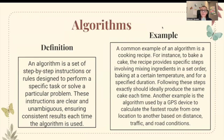An algorithm is a set of step-by-step instructions or rules designed to perform a specific task or solve a specific problem. These instructions are clear and unambiguous, ensuring consistent results each time. A common example is a cooking recipe — baking a cake requires mixing ingredients in a set order, baking at a certain temperature and duration, and if you follow the steps exactly, you produce the same cake every time. A GPS device calculating the fastest route is another example of an algorithm.